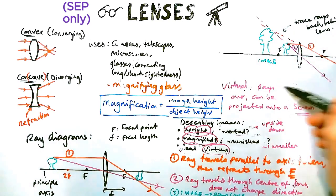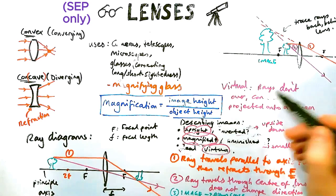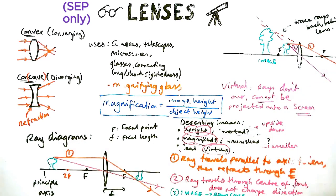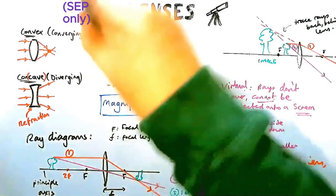So this is a virtual image, meaning the rays don't cross over. And you can't project it onto a screen. So those are the two options, really, for convex lenses.